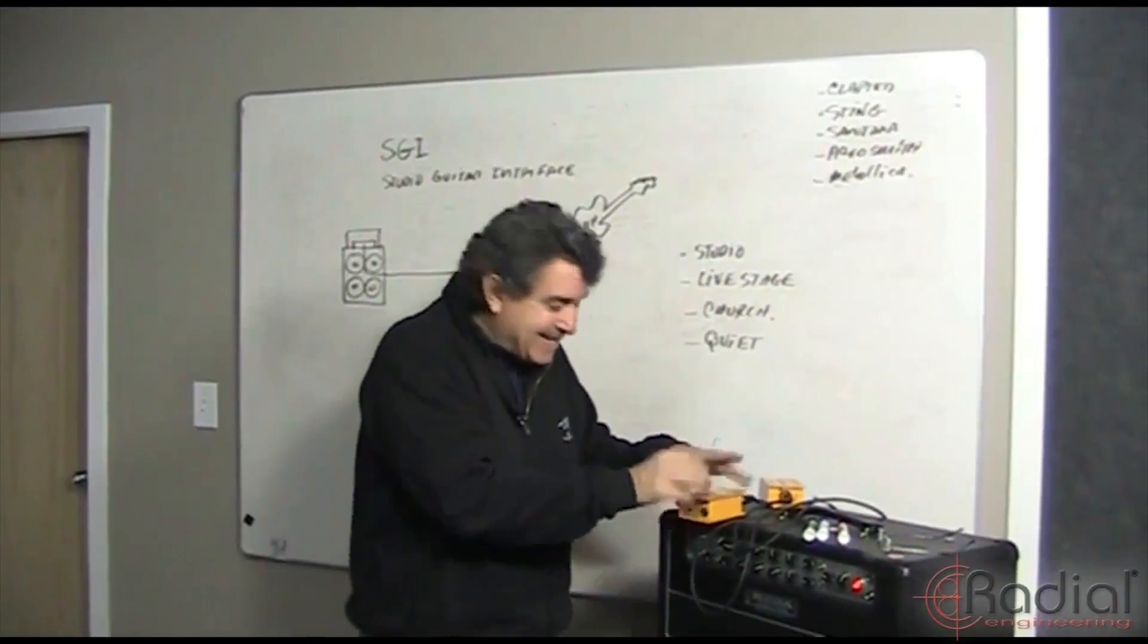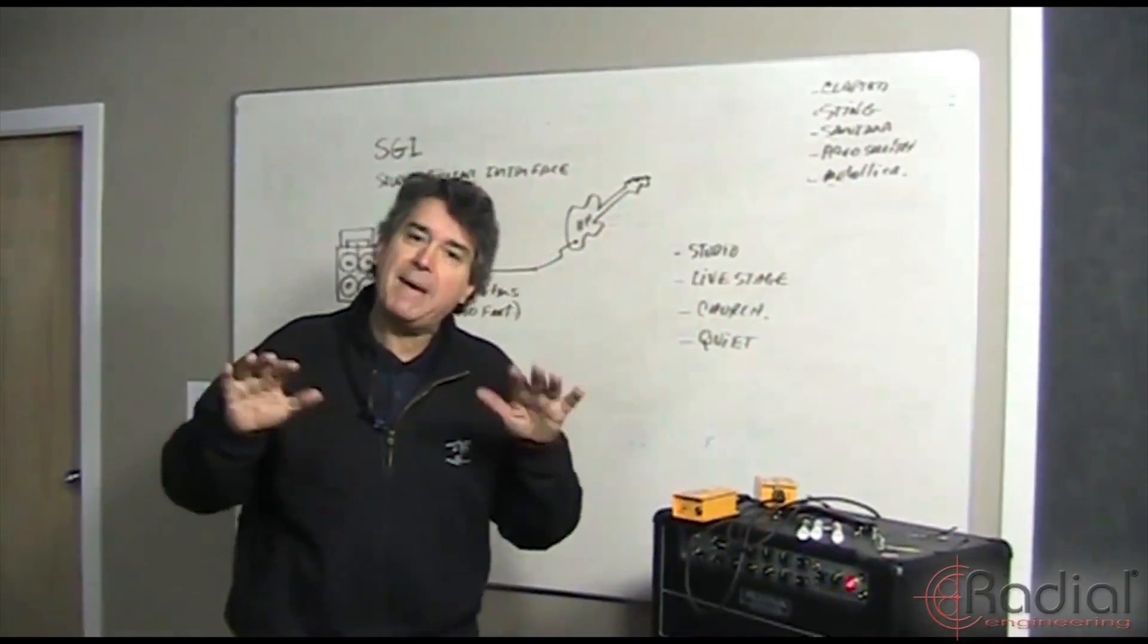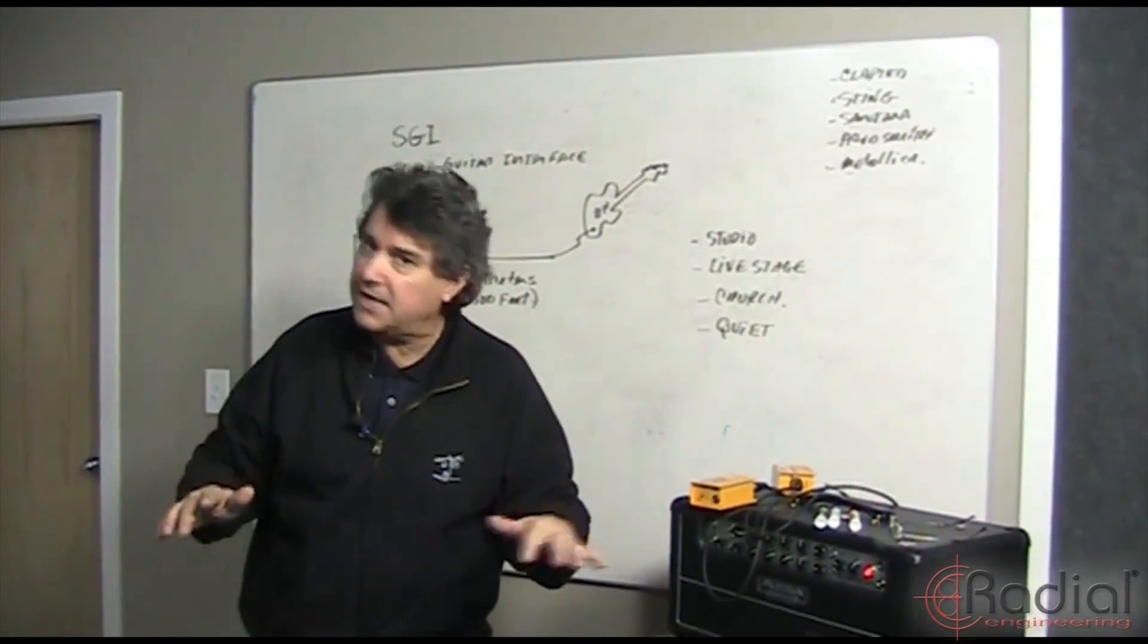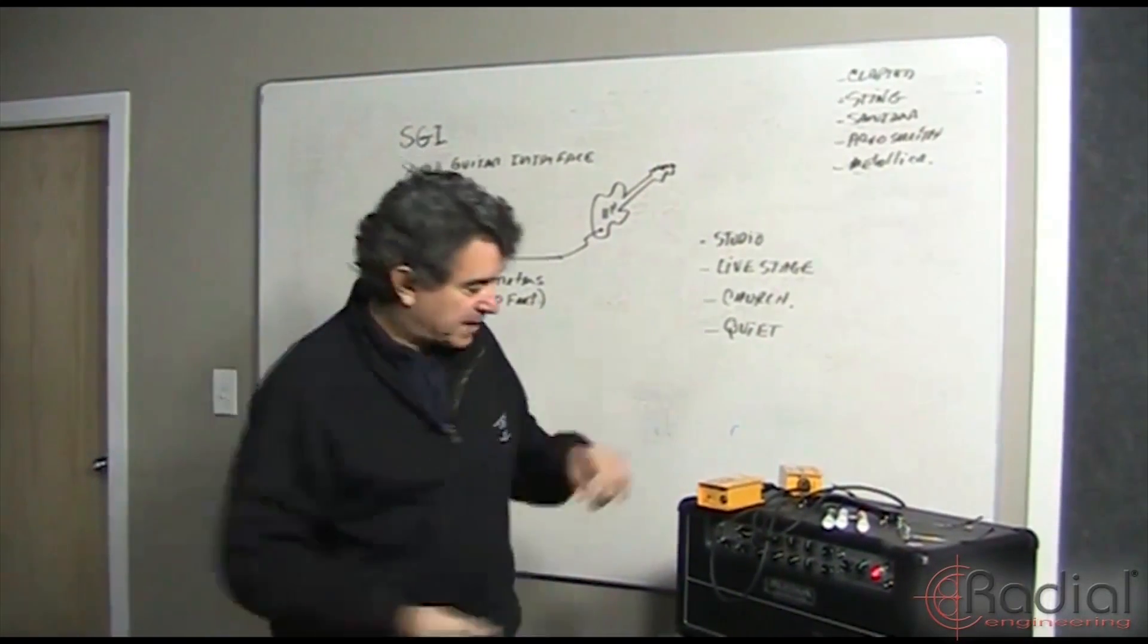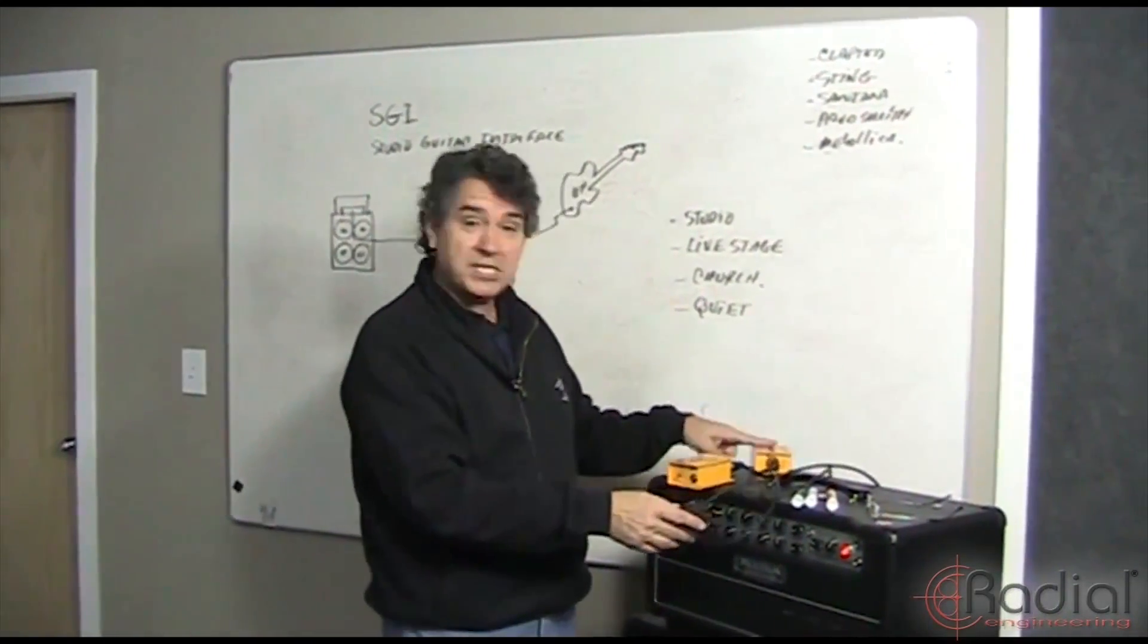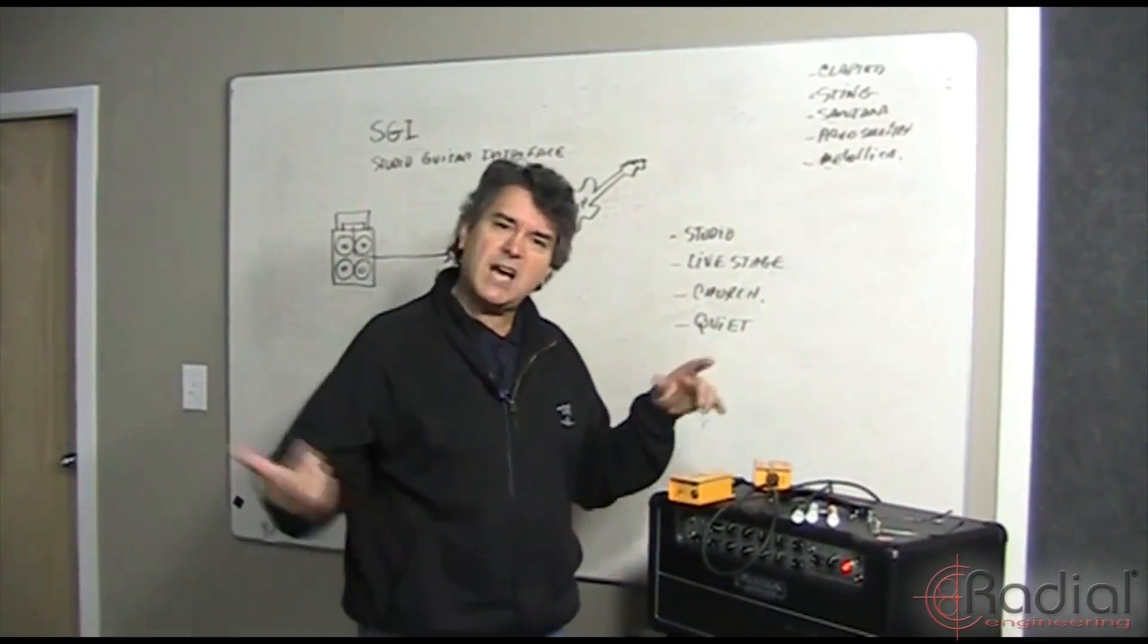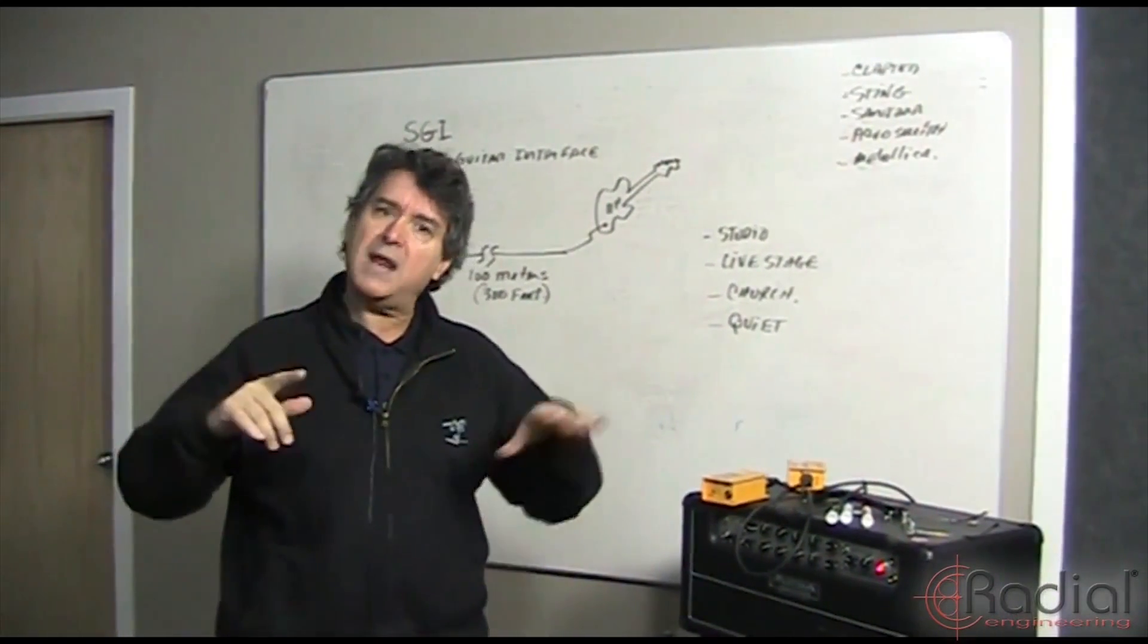to your amplifier. The SGI buffers the signal, balances it, transformer isolates it—does all that stuff so you don't have to worry about noise. Now we're running at low impedance, then we change it back to high impedance at the other end. It's kind of like a DI box on one end and a reamper at the other end.